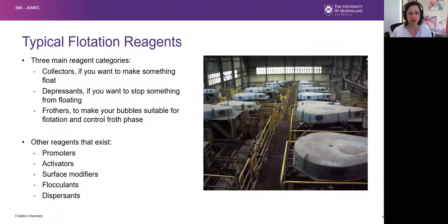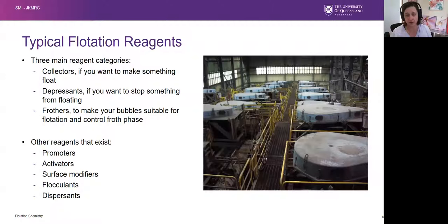Flotation reagents fall into three major categories. There are collectors, if you want to make something float or stick to a bubble. If you want to stop something from floating, you use a depressant. Frothers are used to condition your bubbles to make them suitable for flotation and to control the froth phase that recovers out of your cell. There are plenty of other reagents used — promoters, activators, surface modifiers, flocculants, and depressants among others — but those are the main ones.